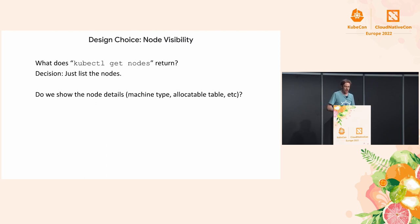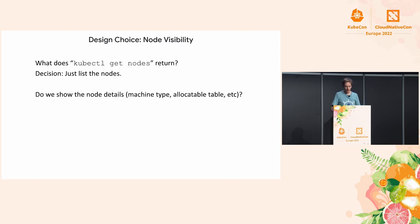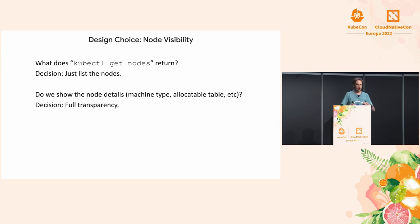A second decision was what about the inner workings of those nodes — should we be transparent about what shape those nodes are, whether it's Intel or AMD, how much of the allocatable table has been used? This was the subject of a lot of debate. Some people said we should hide it because you shouldn't have to care about it. But in the end, we went with full transparency. We want you to trust us to do the right thing with your pods, but also let you verify what we did. We literally don't hide a single field compared to the GKE Standard product.